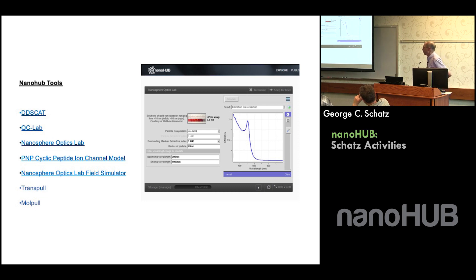All right, but then we did other applications. For example, DDSCAT is a code that does better electrodynamics calculations. It doesn't have to be a spherical particle. The QCLAB is a version of something that we did that run, and there's like a front end for the GAMESS program. Then we did these things having to do with transport. The cyclopeptide ion channel models has to do with ion transport through channels.